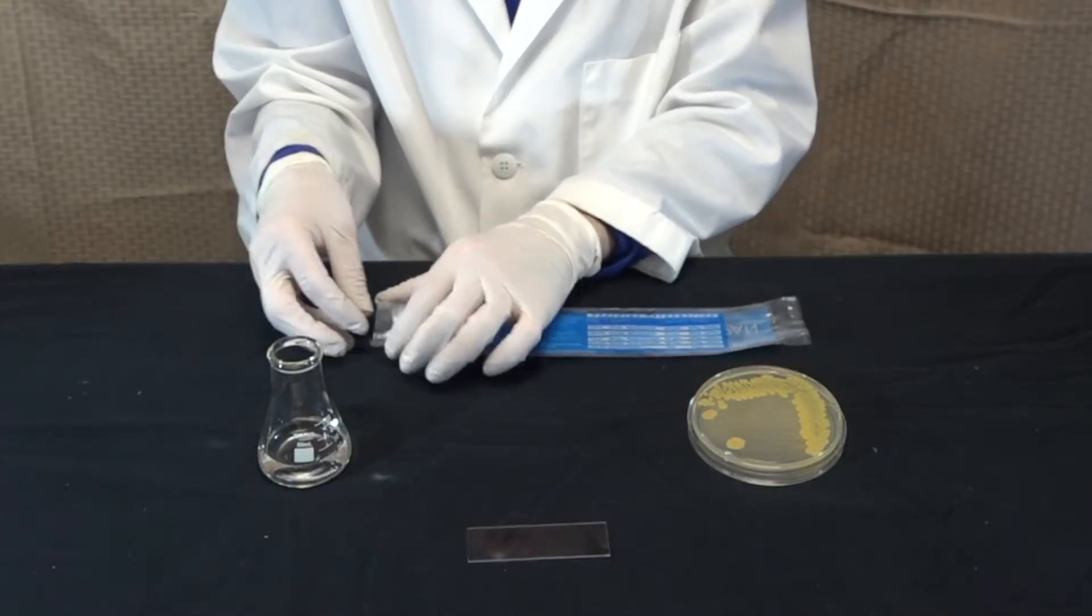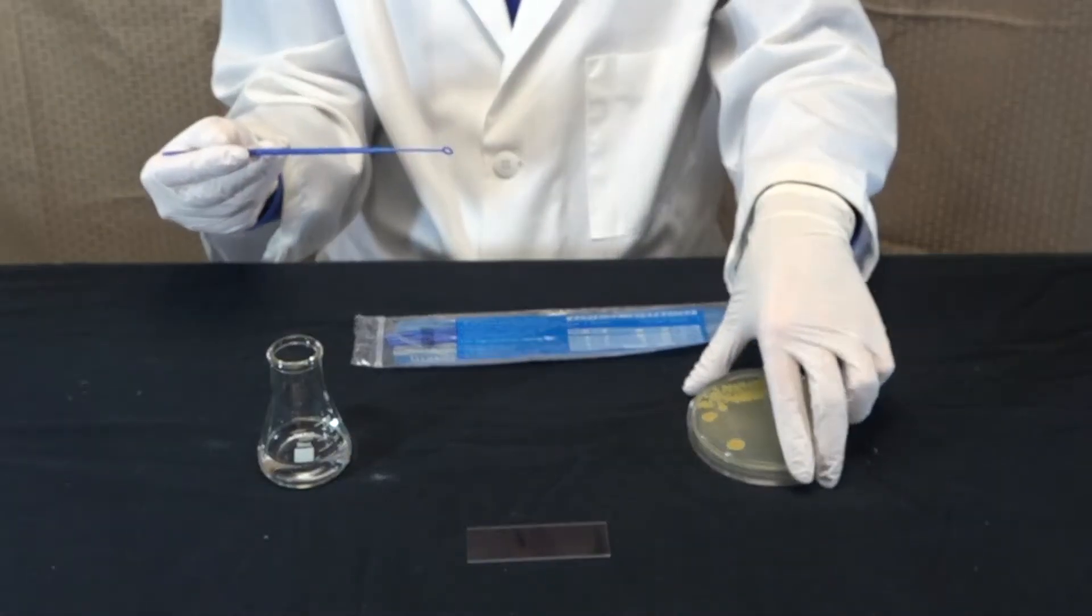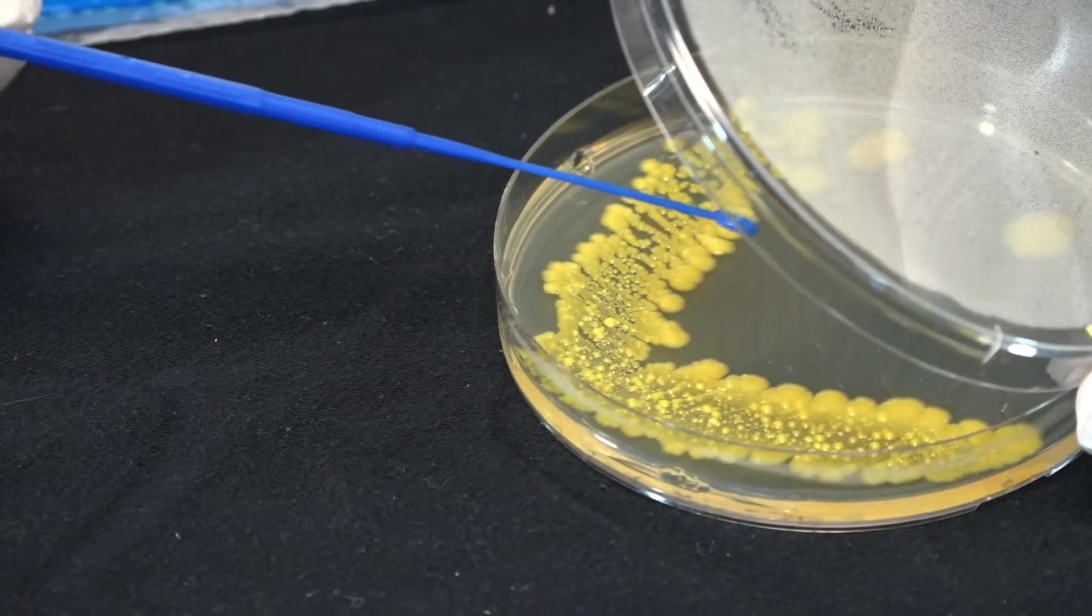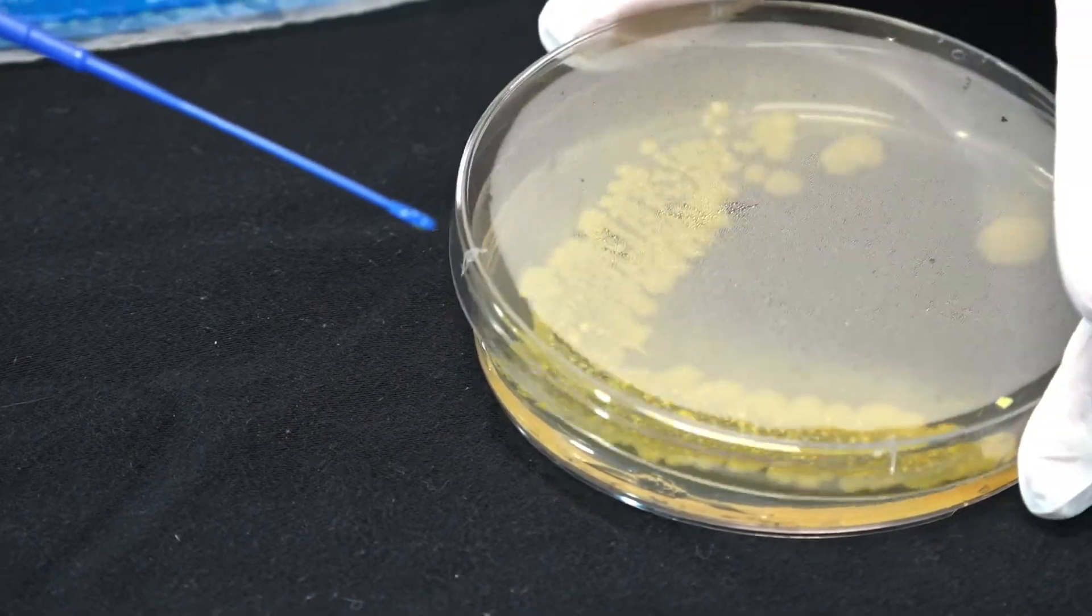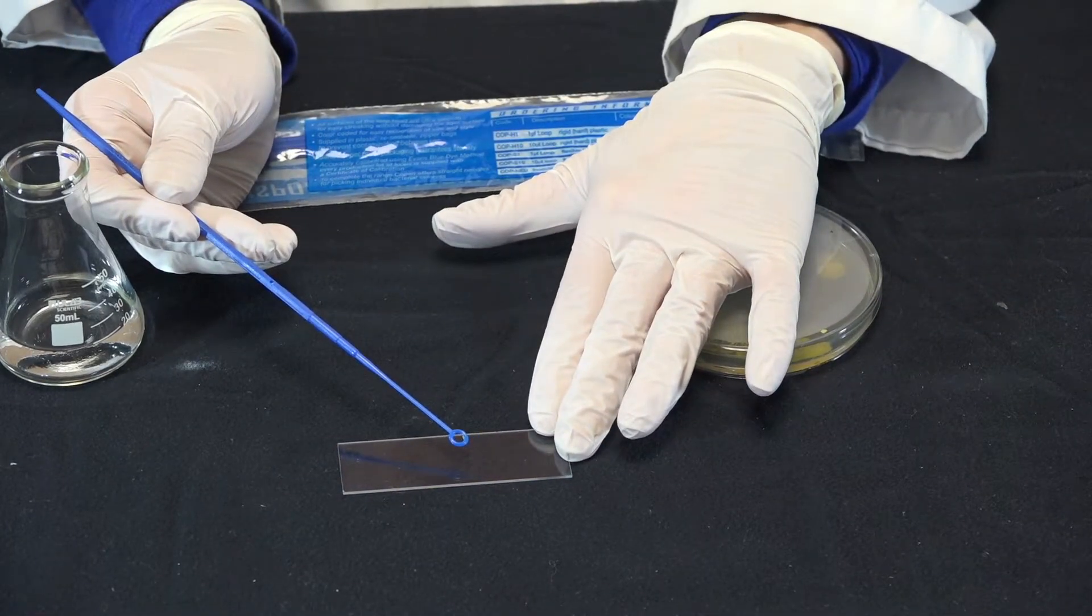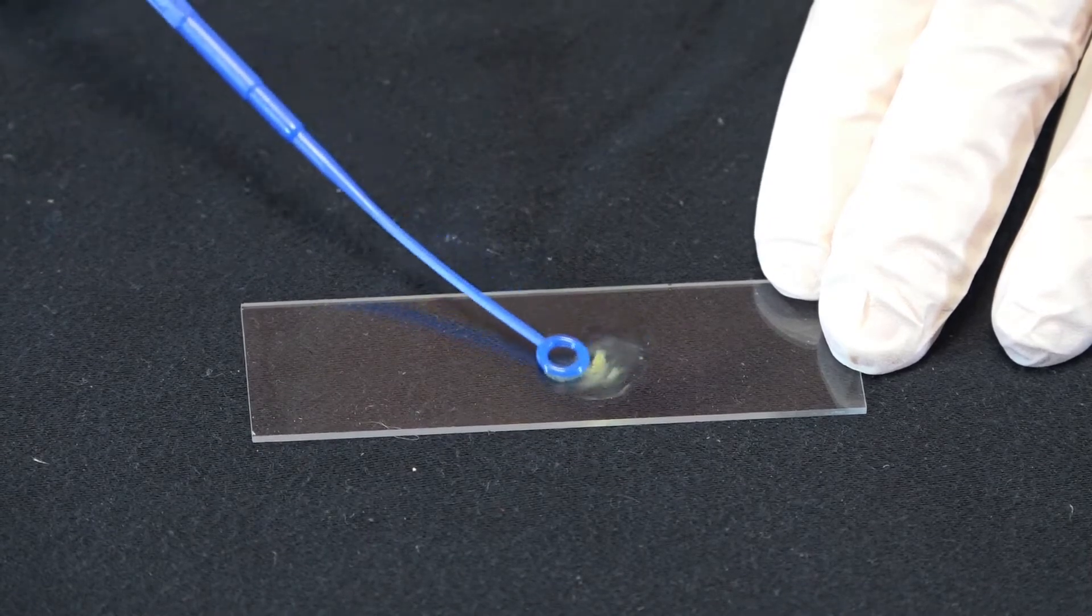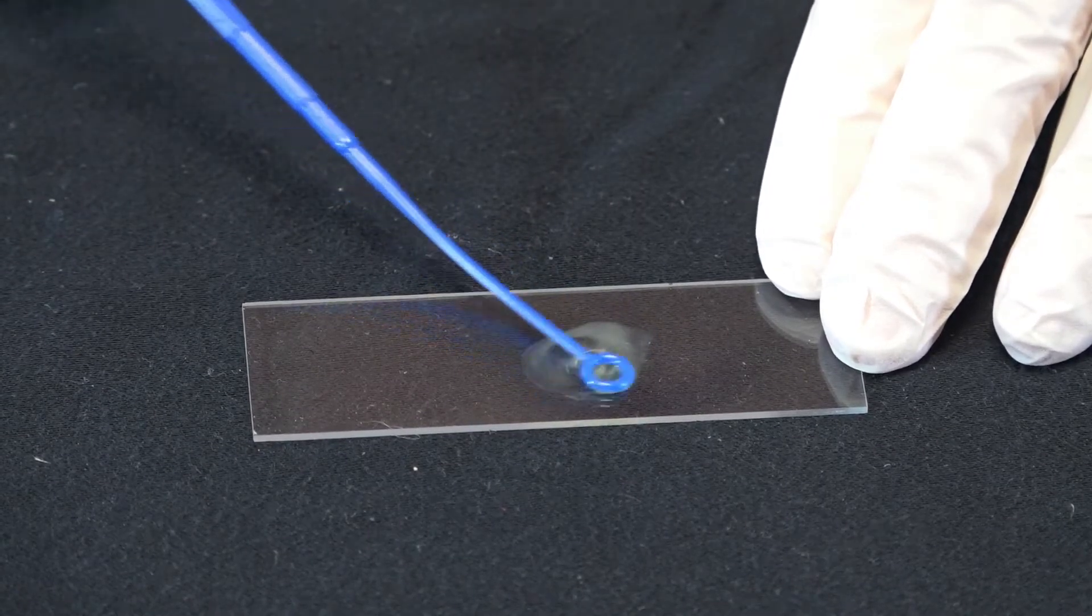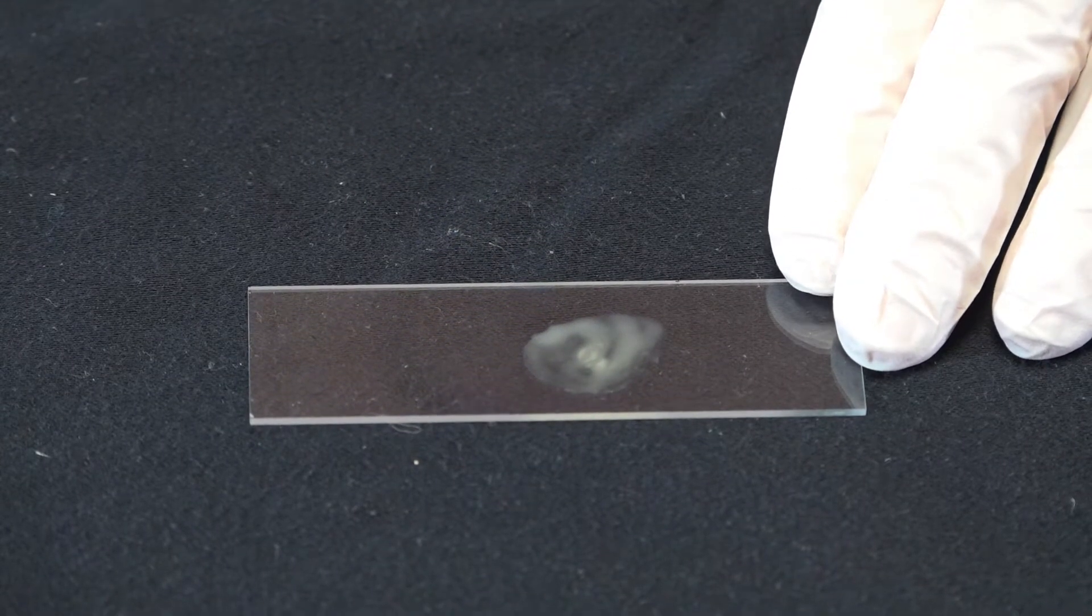Then I'm going to use a new sterile loop to get my colony of bacteria. I'm going to pick up a colony of bacteria and then smear the bacteria in the drop of water. Now let the slide air-dry.